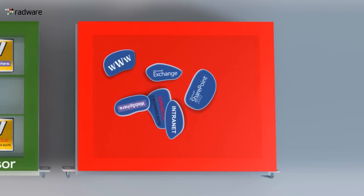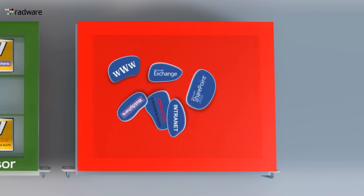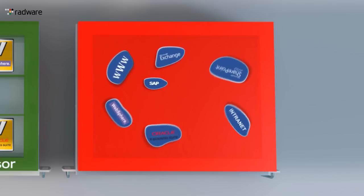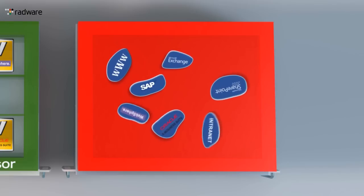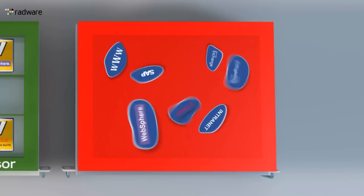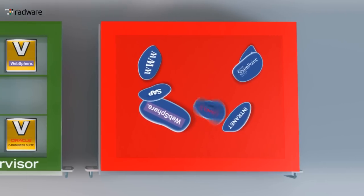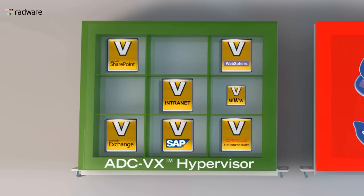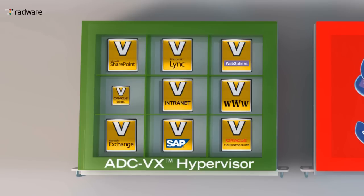In the shared ADC model, deployment of new applications requires a maintenance window, and the impact of the new application on the behavior of the other applications is unknown. With ADC-VX, each VADC runs its own OS version, which allows for independent software upgrades and deployment of new applications without a maintenance window.